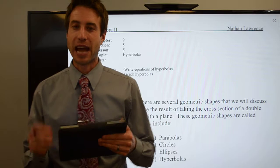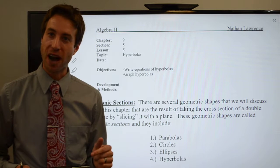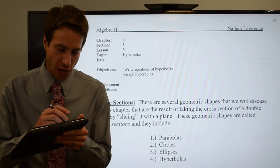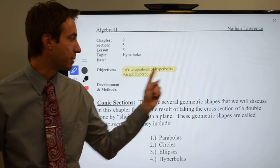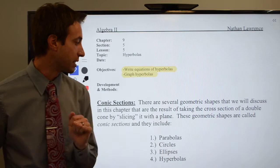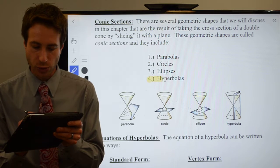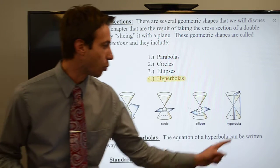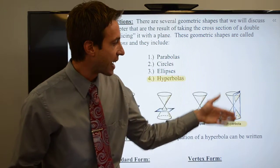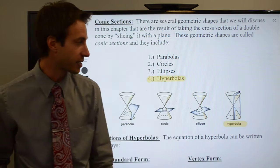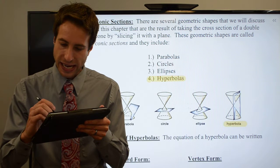Hi guys, welcome to this set of videos. We've come to our fourth and final type of conic section. Here in Chapter 9, Section 5, we're going to take a look at hyperbolas. The objectives are the same as every section in this chapter: you'll need to write equations for hyperbolas and graph them. A hyperbola is formed when you take a conic — two cones tip to tip — and divide it with a plane that runs vertically through it.